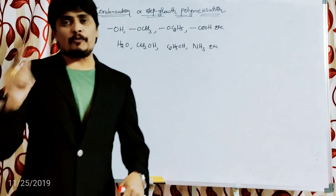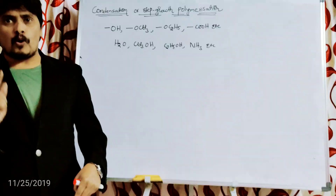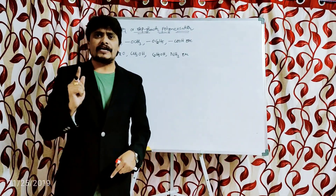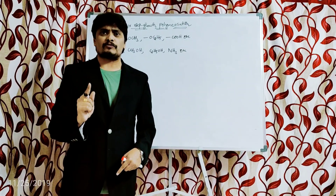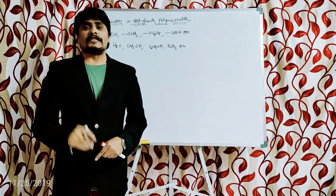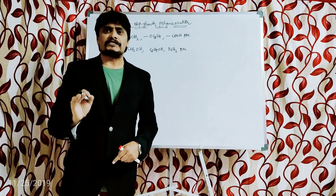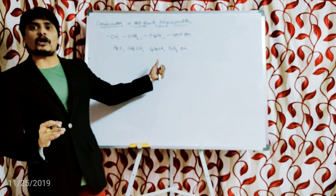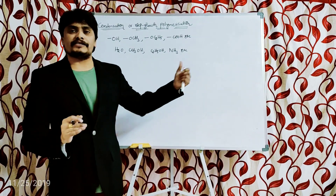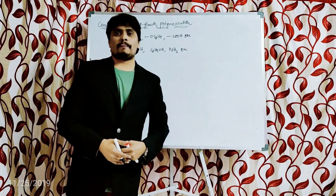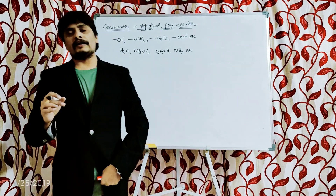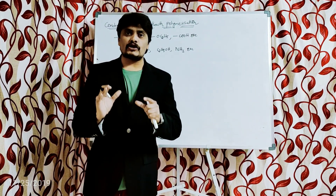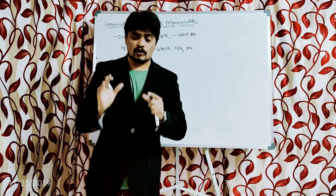Based upon the definition, we can also say that during condensation or step growth polymerization, the elimination of small molecules like water, methanol, ethanol, ammonia, etc. takes place. This is the second critical point associated with condensation or step growth polymerization.